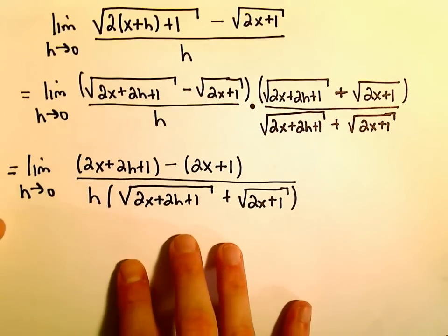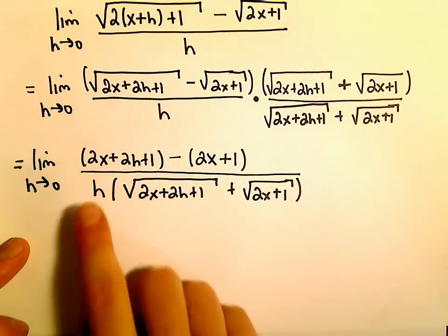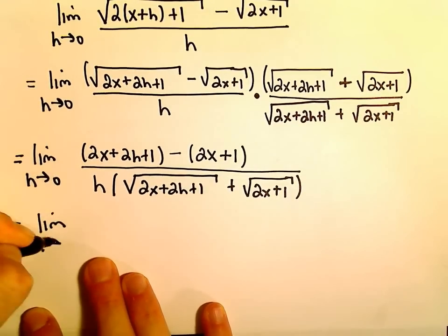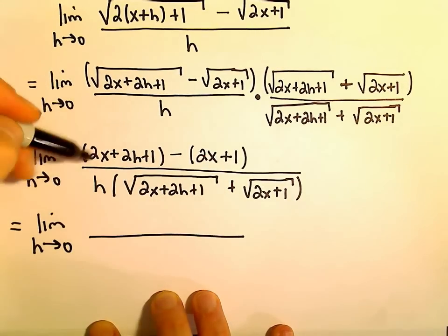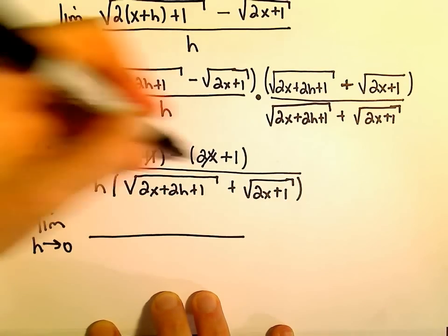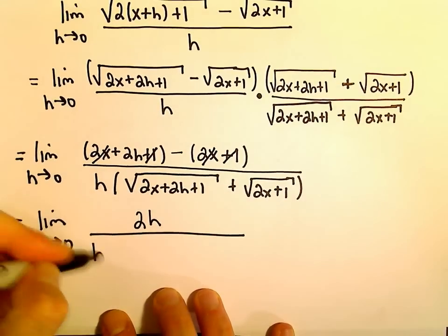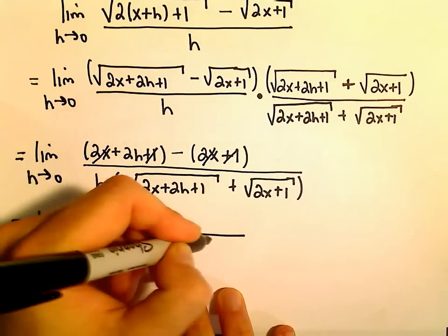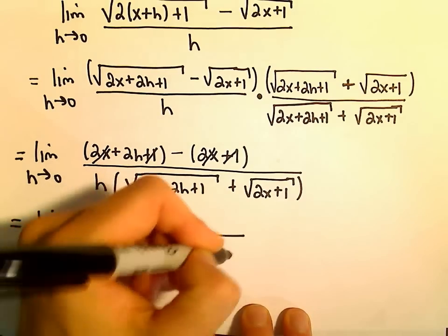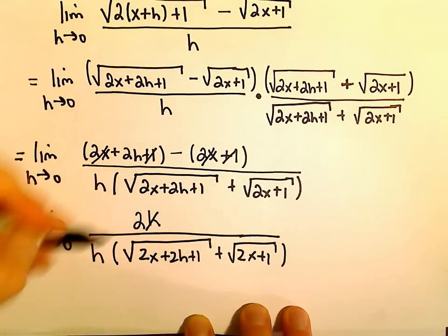I usually don't multiply the denominator out because, as you've seen from a few examples, at some point we'll be able to factor an h out of the numerator, cancel it out, and then actually evaluate the limit. In the numerator, we would have 2x minus 2x, so those cancel. We'd also have positive 1 minus 1, so that's gone too. So we're left with 2h in the numerator. We still have our h in the denominator along with all the square root stuff — the square root of 2x plus 2h plus 1 plus the square root of 2x plus 1. Now we can just cancel out the h's.